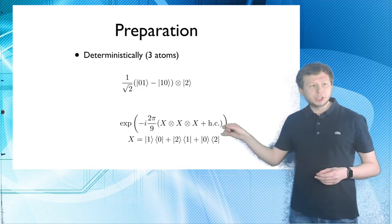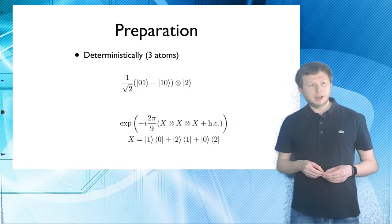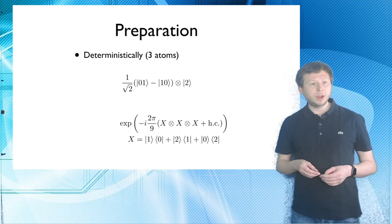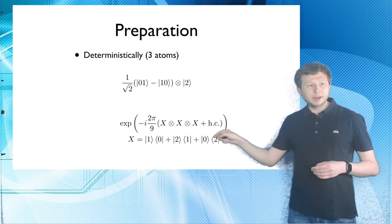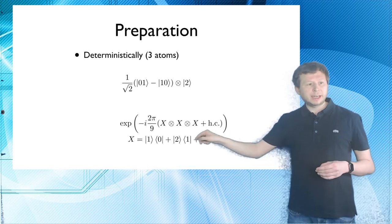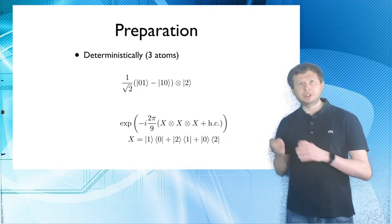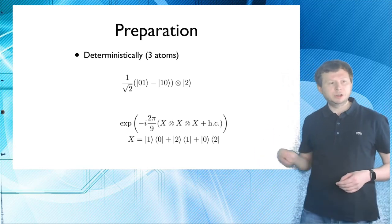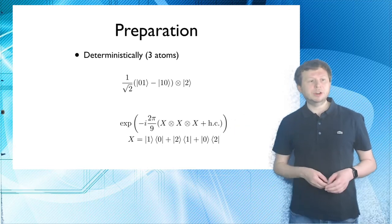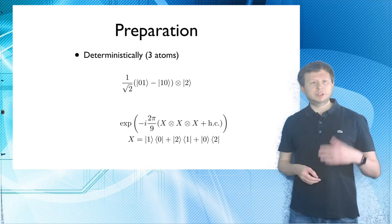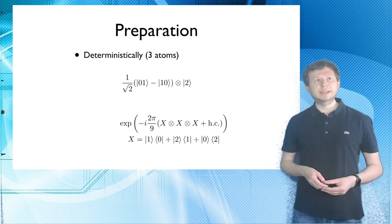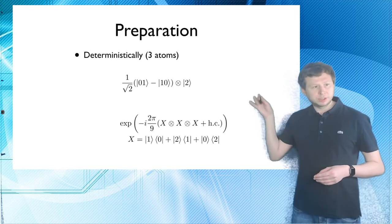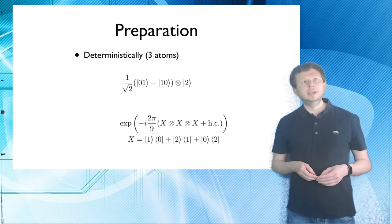So you start out with a Bell state between 0 and 1 and tensor up a 2 state over here. And then you apply this unitary, which is denoted down here, for a certain amount of time, so 2 pi squared over 9. And you apply this X sort of cycling through gate or exchange gate, if you wish, which maps 0 to 1, 1 to 2 and 2 to 0. And you apply this here with its Hermitian conjugate, of course. And if you do this unitary, you can deterministically end up with our psi 3d. So, of course, this example, as it's written up here, is also for three atoms.